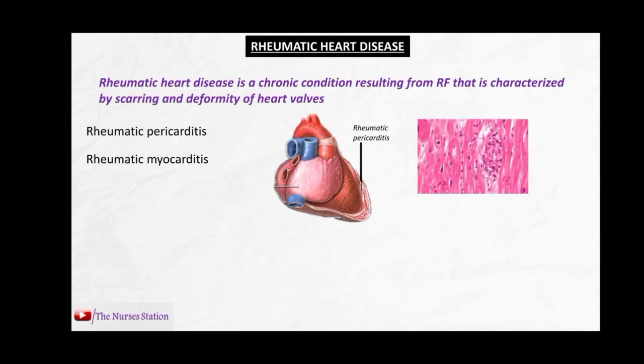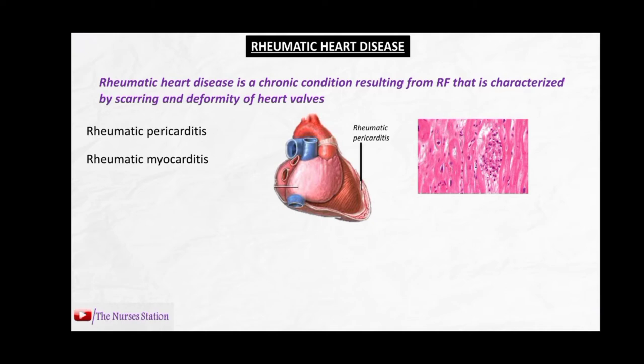If the myocardium is attacked by rheumatic fever, it is termed rheumatic myocarditis. Characteristic lesions called Aschoff bodies develop in the myocardium. Aschoff bodies are small pinhead immune-mediated granulomas present in the myocardium. Due to rheumatic myocarditis, the myocardium becomes weak and flabby and cannot pump enough blood — cardiac output decreases.